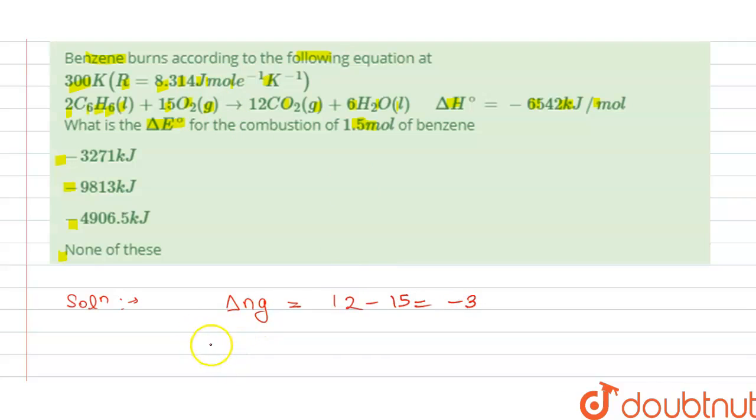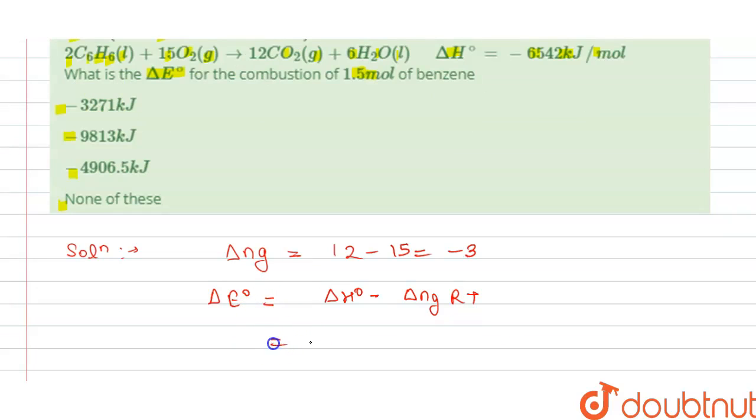We know that delta E⁰ equals H⁰ minus delta ng times RT, where R is gas constant and T is temperature. From this we have minus 6542, and minus minus will become plus 3RT.